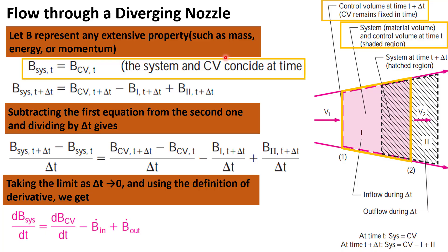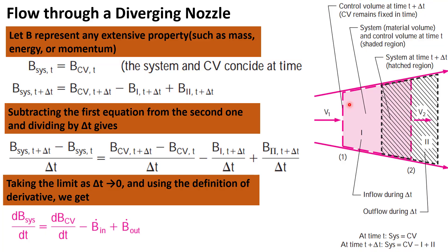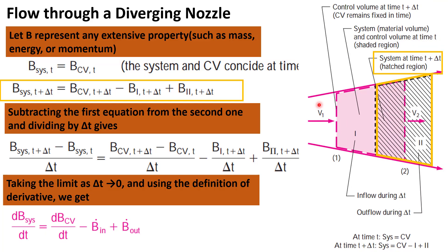We will now derive the Reynolds Transport Theorem. Consider the flow through a diverging nozzle as shown in this figure. At the initial time t, the system and the control volume coincide with each other and they share the same boundaries, as highlighted by this yellow borderline.